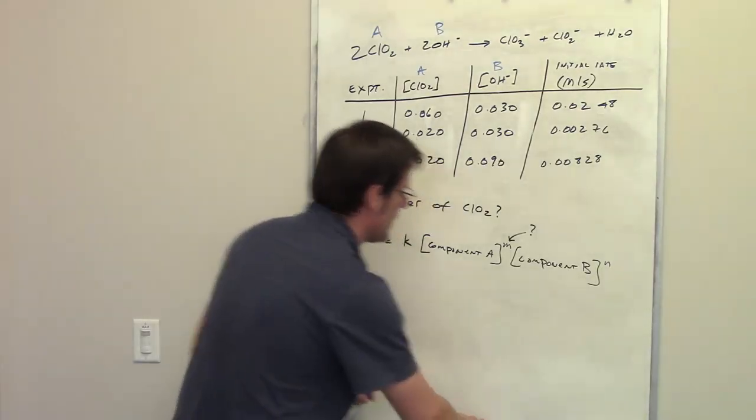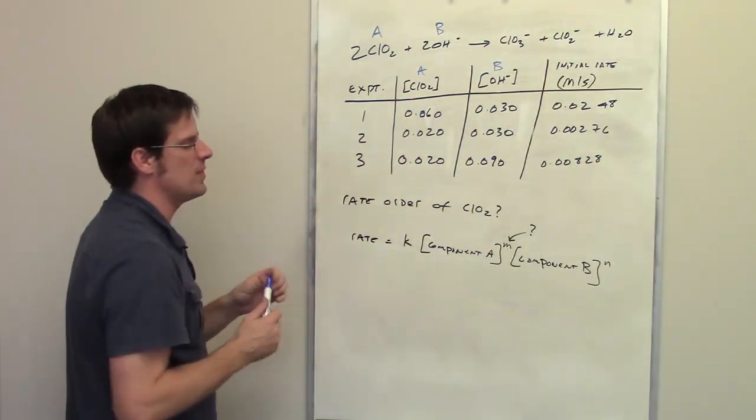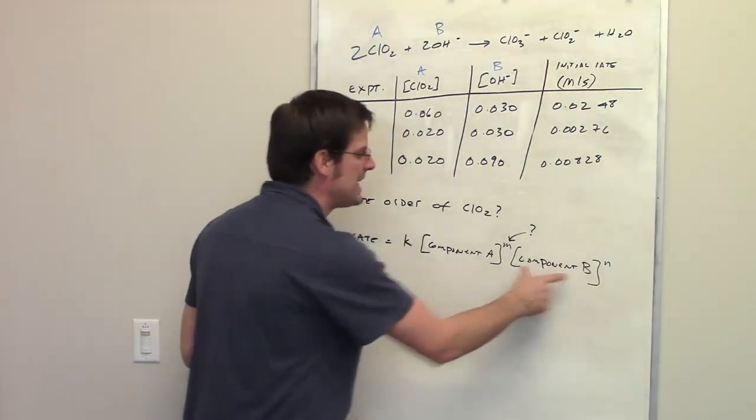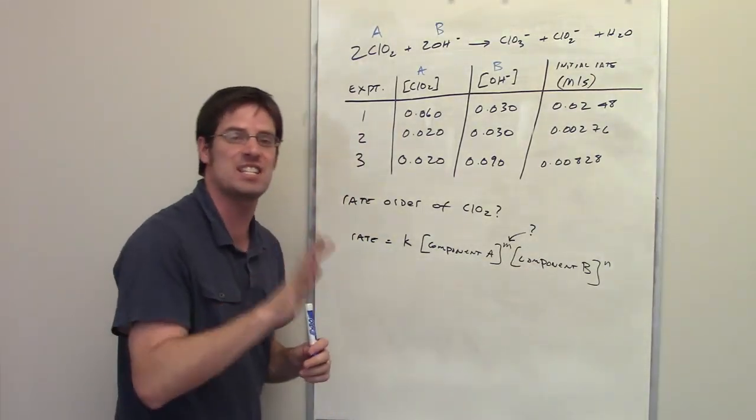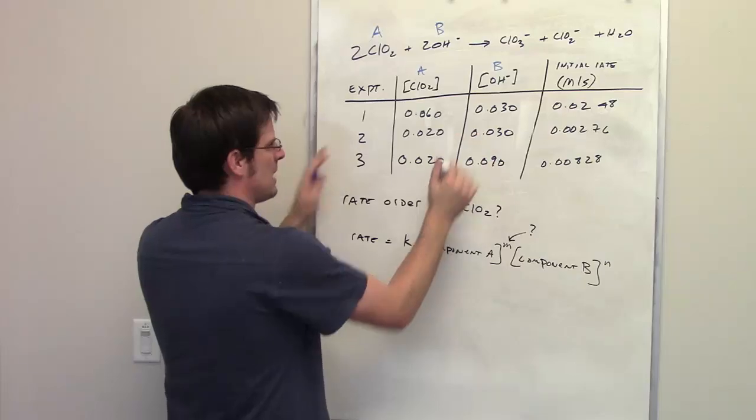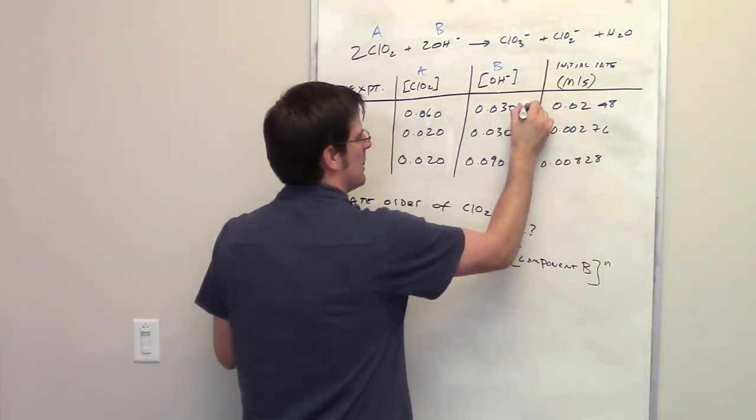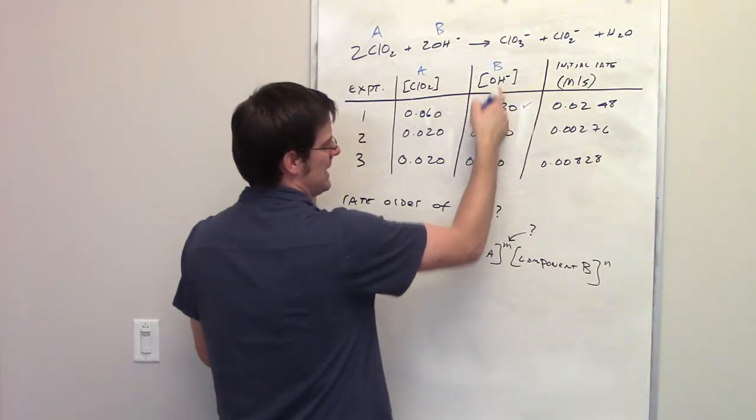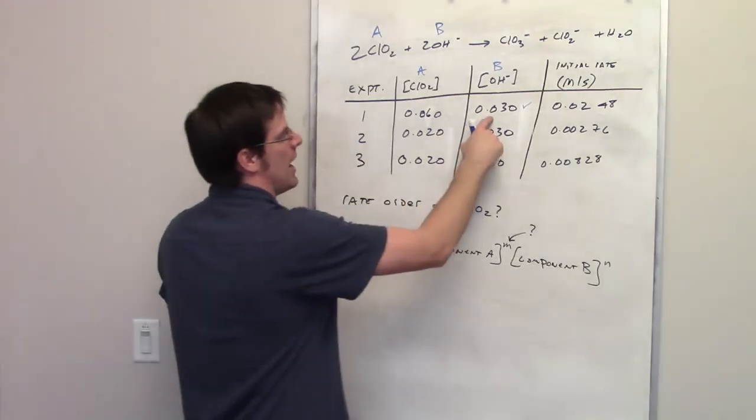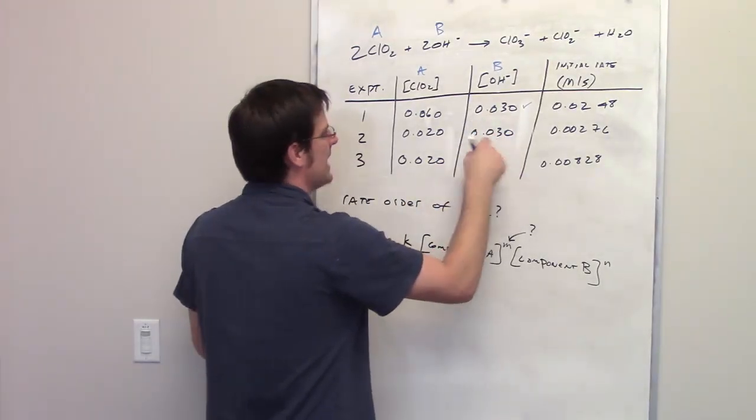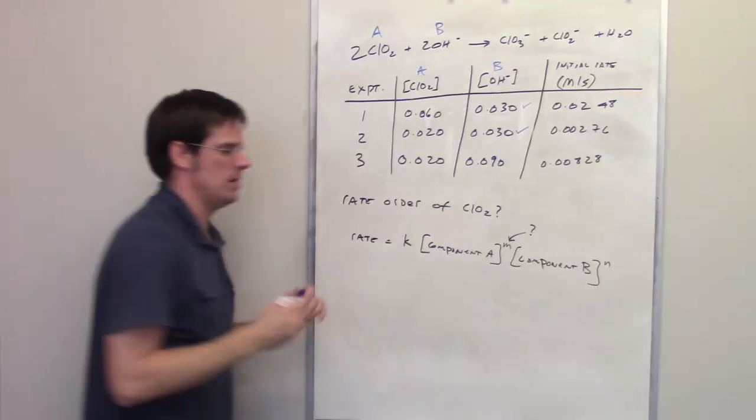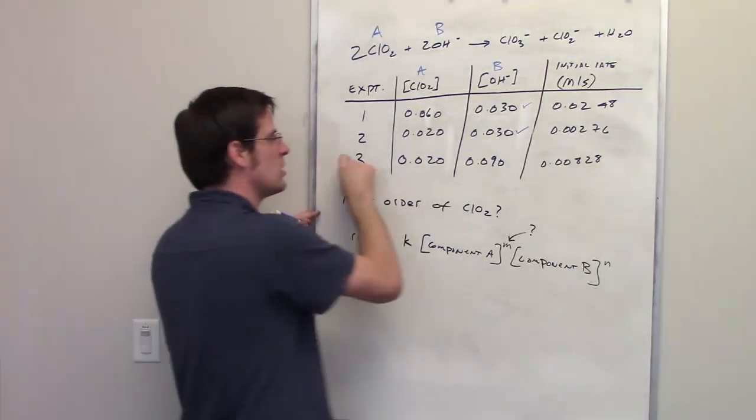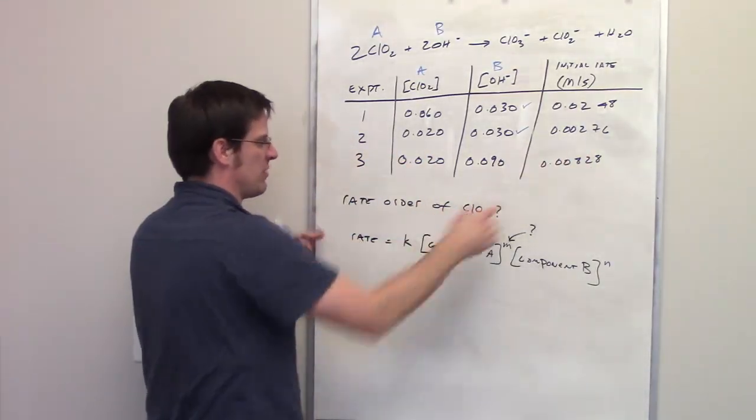Well, what we do is we focus in on the experiments where component B's concentration was kept the same. If we look up at this table, you'll notice that in experiment 1, component B, the hydroxide, had a concentration of 0.03, and in experiment 2, it also had a concentration of 0.03. So I'm going to ignore experiment 3 for this question.